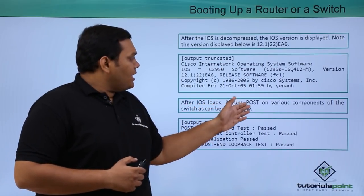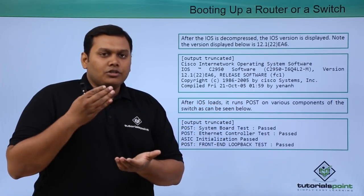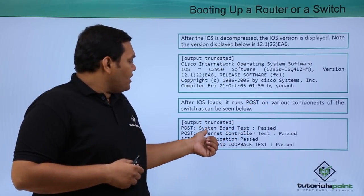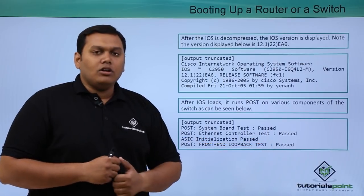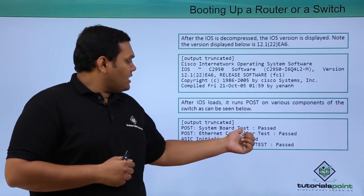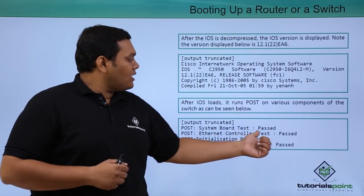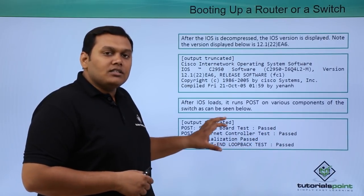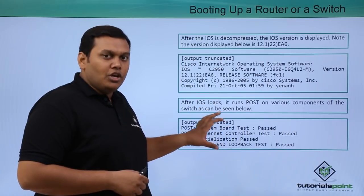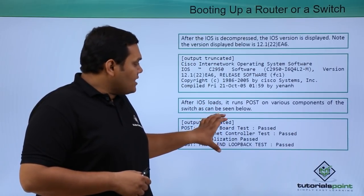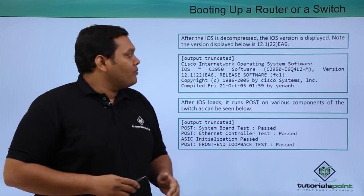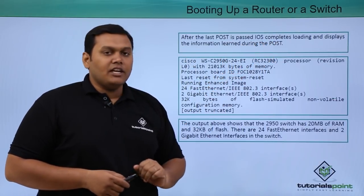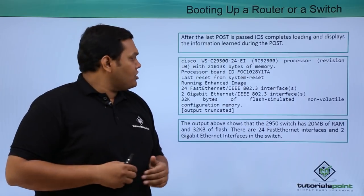After the IOS loads, it runs the POST. The self-test runs on various components and displays whether each test passed or not. You can see the system board test passed, Ethernet controller test passed, and front-end loopback test passed — these are the components available on the switch, and they have all passed the POST process.